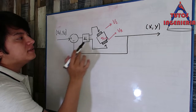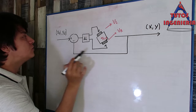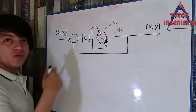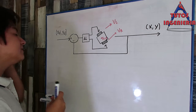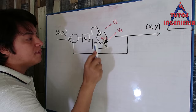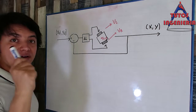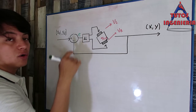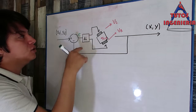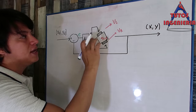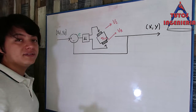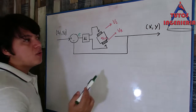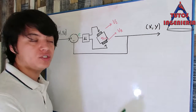We have to know at every sample of time what is the position of the car, and that position is going to be compared with the desired point — the point that we want to achieve. We have to calculate in every sample of time that position, because that is how the microcontroller calculates the velocity of the right wheel and the left wheel to achieve the desired trajectory.